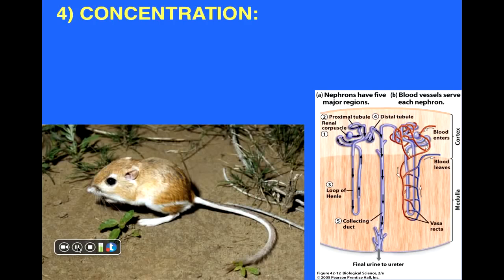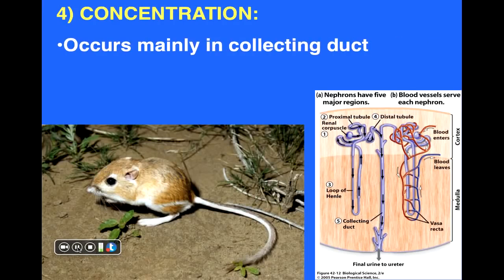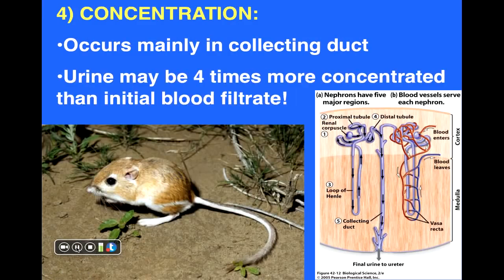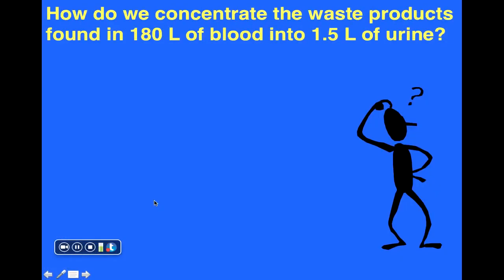The final process is how we produce such concentrated urine — simply concentration. This occurs primarily in the collecting duct, which collects all the urine produced from the thousands of nephrons throughout our kidneys. Recall that in humans we can produce urine about four times more concentrated than the blood filtered, while animals like the kangaroo rat can produce even more highly concentrated urine in an attempt to conserve as much water as possible.